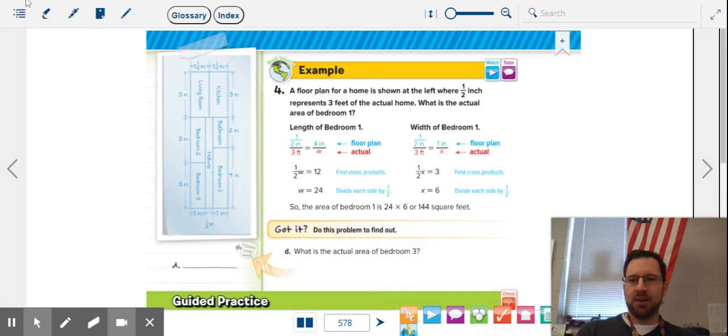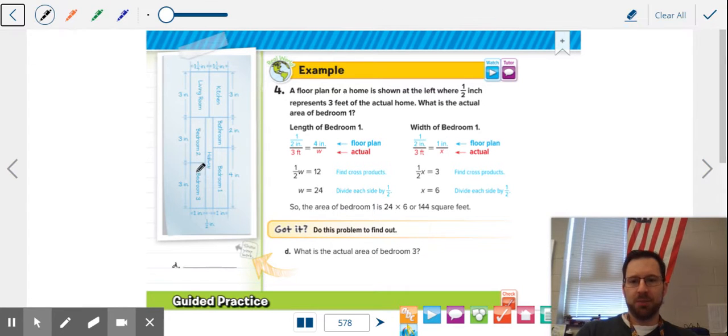All right, so what are we looking at here in this next problem? We have a blueprint of a house—looks like there's three bedrooms, a bathroom, a kitchen, a living room and a hallway. This might be an apartment or a house, it's really long so it could be like a ranch home. What is the actual area of the bedroom?